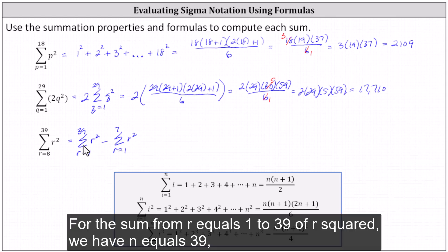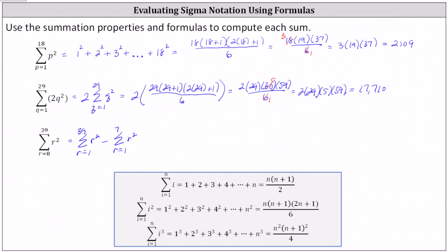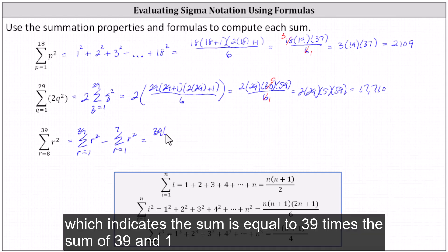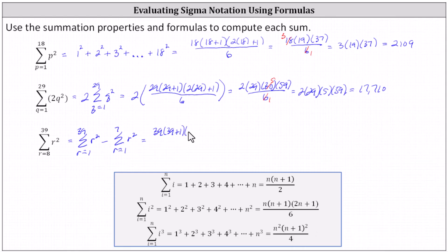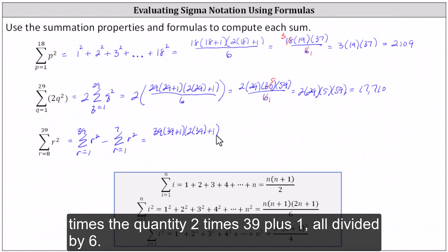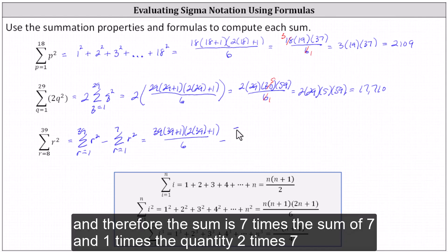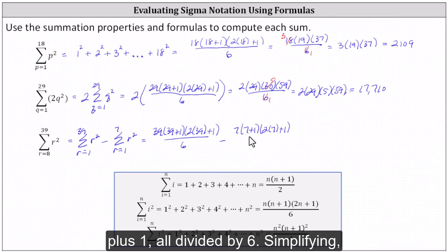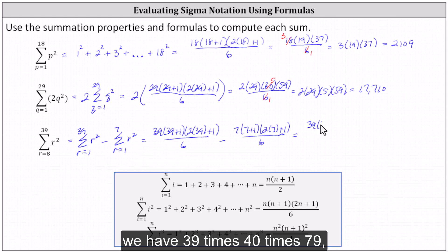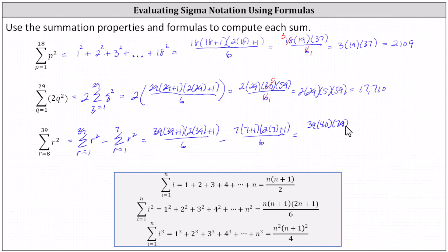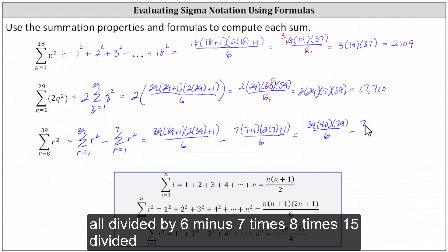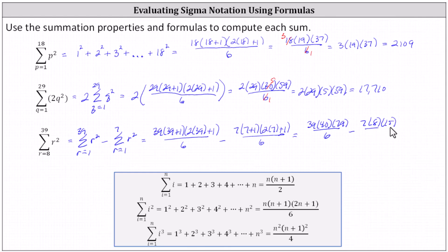For the sum from r equals 1 to 39 of r squared, n equals 39, giving us 39 times (39 plus 1) times (2 times 39 plus 1), all divided by 6. Then minus, for the sum from r equals 1 to 7 of r squared, n is 7, giving us 7 times (7 plus 1) times (2 times 7 plus 1), all divided by 6. Simplifying, we have 39 times 40 times 79 all divided by 6, minus 7 times 8 times 15 divided by 6.